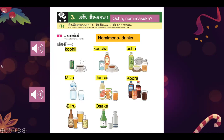Nomi mono: A - Koohii, B - Koocha, C - Ocha, D - Mizu, E - Juusu, F - Koora, G - Biiru, H - O-sake. Hai, wakarimashita.